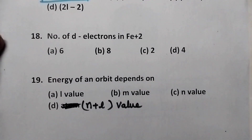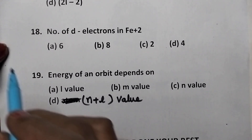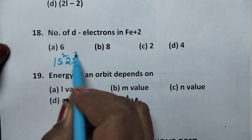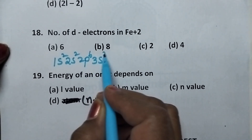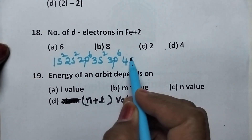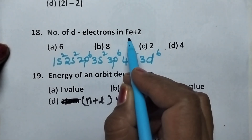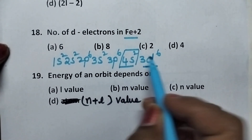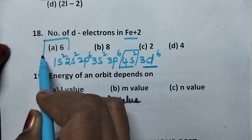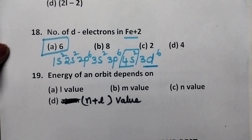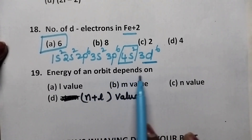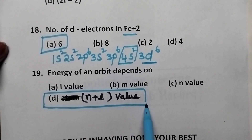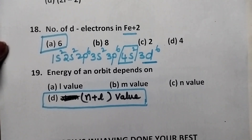Number of D electrons in Fe2+ ion is — iron atomic number is 26 and its configuration is 1s2, 2s2, 2p6, 3s2, 3p6, 4s2, 3d6. For Fe2+, outermost electrons will be removed, so the D orbital contains 6 electrons. Option A, that is 6, is the right answer. The energy of an orbital depends upon — undoubtedly, the energy of the orbital depends upon both N and L value, i.e., N plus L value. Option D is the right answer.